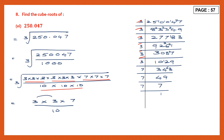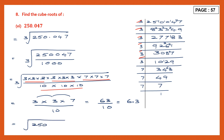3 threes are 9, 9 sevens are 63 — 63 by 10. Now if we write this as a decimal number we get 6.3, because here there is 1 zero, there should be 1 decimal place. So we have found the cube root of 250.047 and that is 6.3. So this is our answer: 6.3.